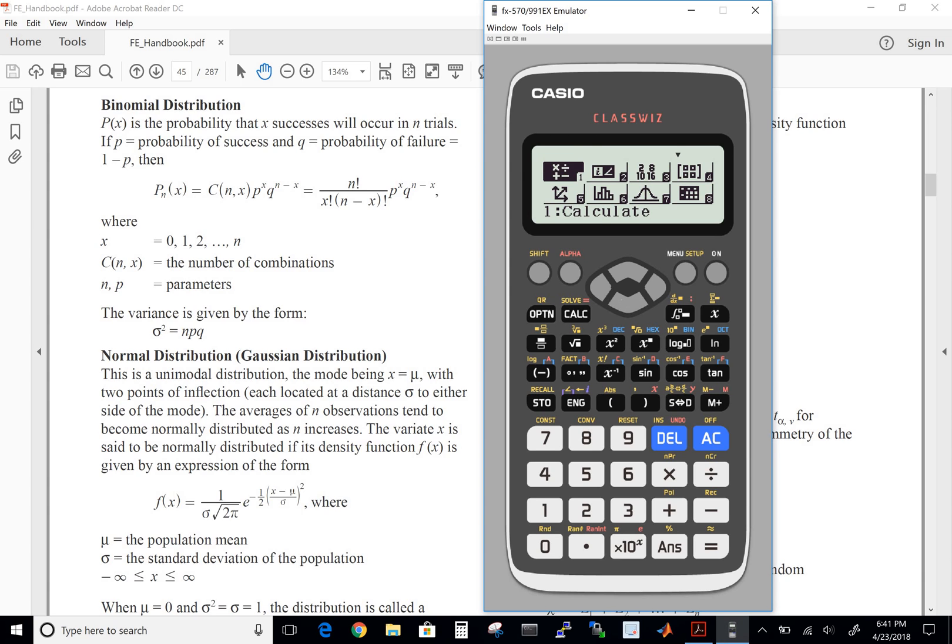If you go down to 7, we have a distribution section here. We can hit the equal signs to enter. Then section 4 here, we have a binomial distribution. PD is probability distribution. We click 4, and then click 2 for variable.